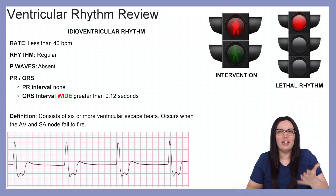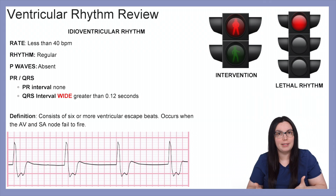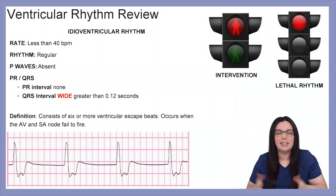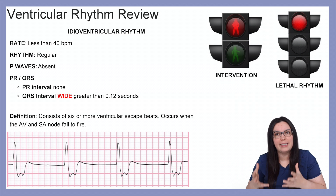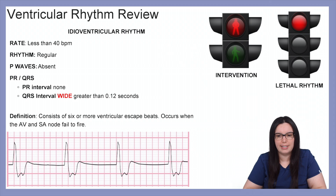So we're going to begin by looking at our idioventricular rhythm. The rate is going to be less than 40 beats per minute but it will be regular. P waves will be absent and because they're absent there will be no PR interval. QRS intervals are going to be wide — they're ugly, they're disgusting — they're greater than 0.12 seconds. The definition for this rhythm consists of six or more ventricular escape beats occurring when the AV and SA node failed to fire.